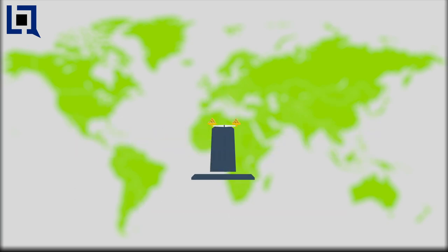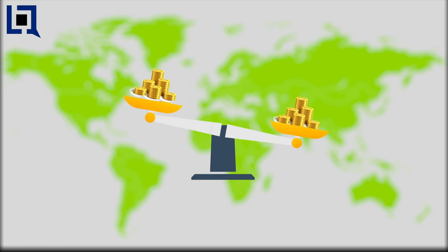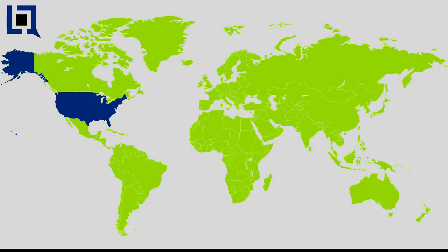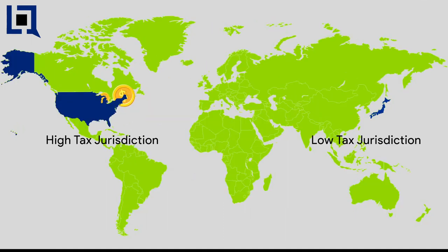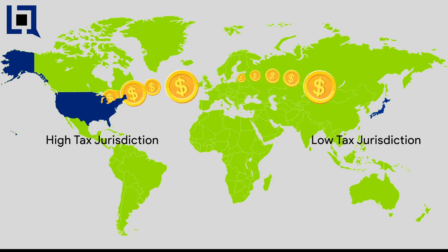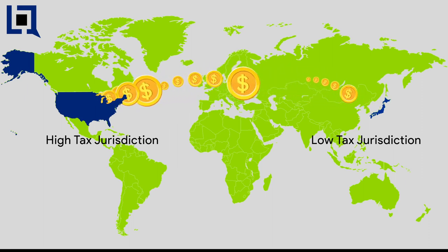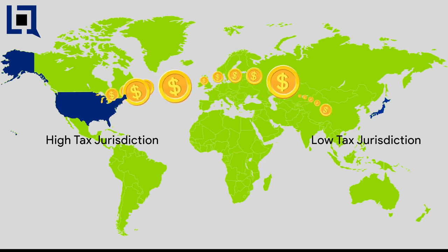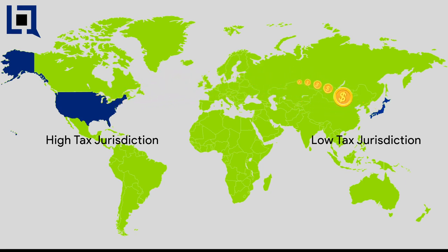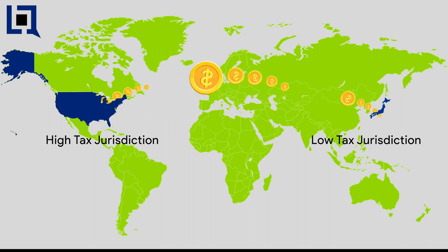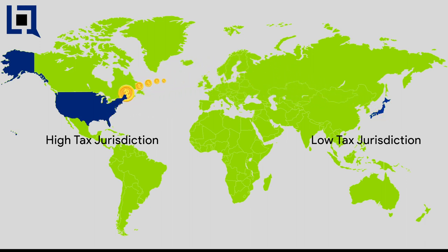Related companies which are located in different countries can overstate or understate profits to avoid taxes based on the tax policies of their country. This can be detrimental to the economic health of that country. Therefore, local authorities keep a check on companies to ensure they are involved in healthy business.